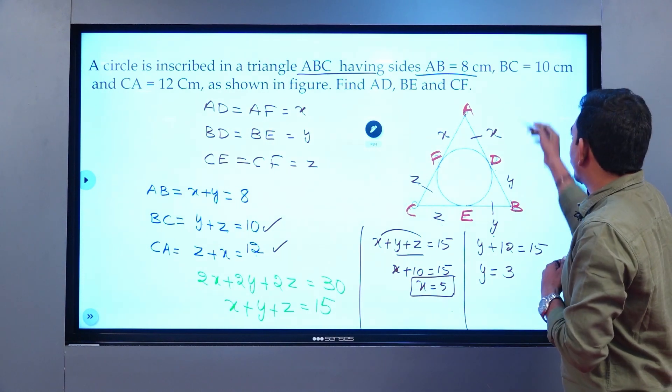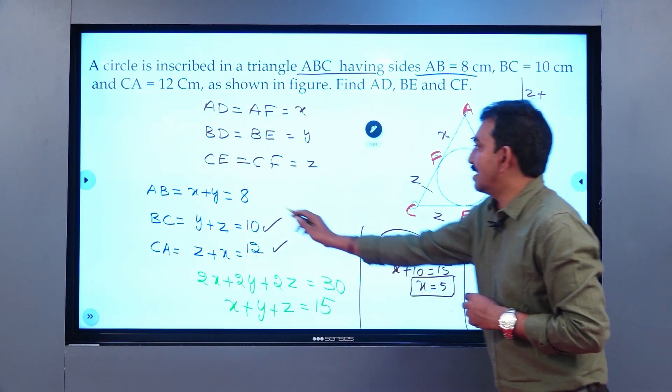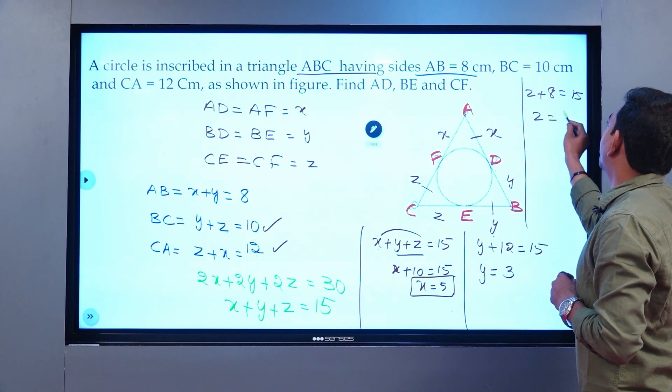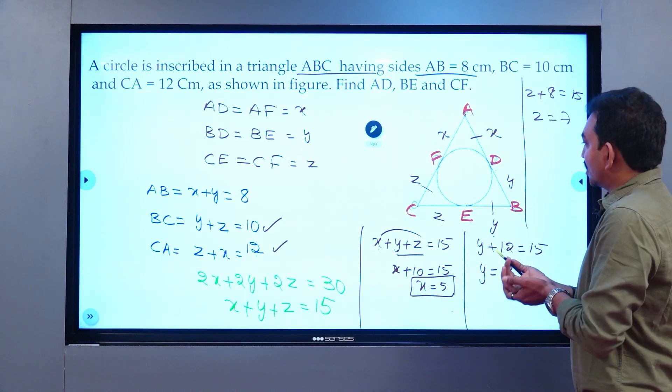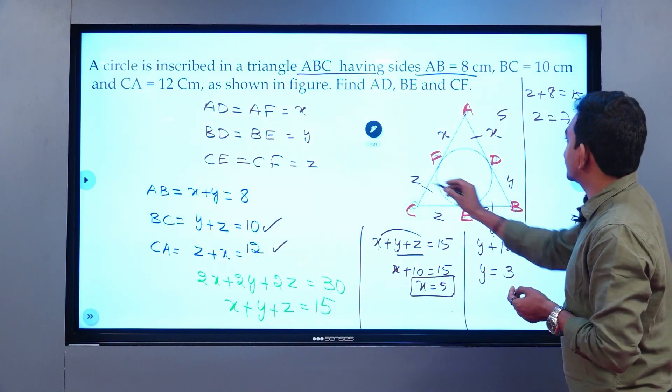On a similar note, what is X plus Y value? X plus Y is 8. Z plus 8 equals 15. Z is 15 minus 8, which is 7. So in this way, we can find X as 5, Y as 3, and Z as 7.